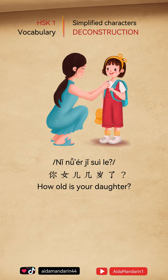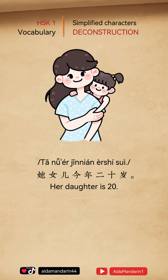你女儿几岁了? How old is your daughter? 她女儿今年二十岁。Her daughter is twenty.